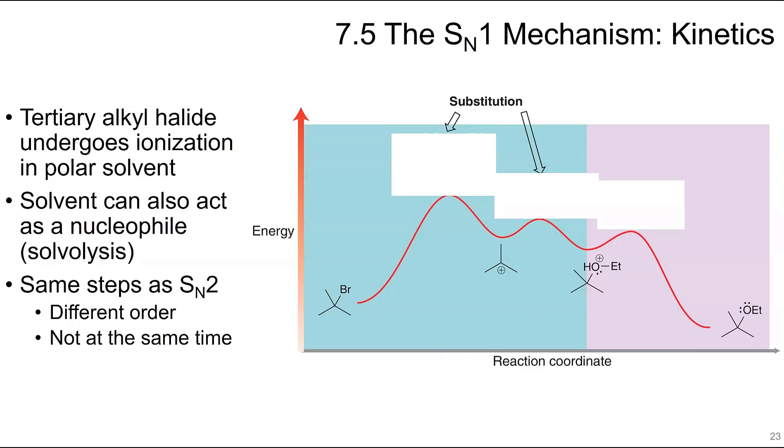In the kinetics of SN1 reactions, it is a little bit different because of the way that the reaction occurs. In this example, a tertiary alkyl halide, or tert-butyl bromide, undergoes ionization in a polar solvent. That first part of the activation energy is the loss of the leaving group. After the loss of the leaving group, we form the carbocation. And then you get the nucleophilic attack or the nucleophilic hug.